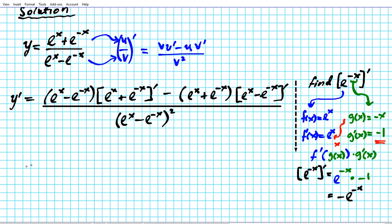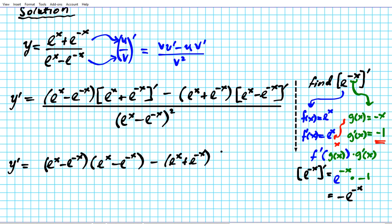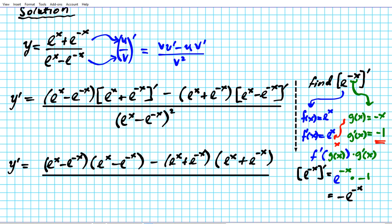Now we can go back to the main expression and substitute this result. y prime equals: e to the x minus e to the negative x, times the derivative of the numerator — differentiating e to the x gives e to the x, and differentiating e to the negative x gives negative e to the negative x. Then minus the quantity e to the x plus e to the negative x, times the derivative of the denominator — which gives e to the x plus e to the negative x, since the negative from the chain rule combines with the minus sign.